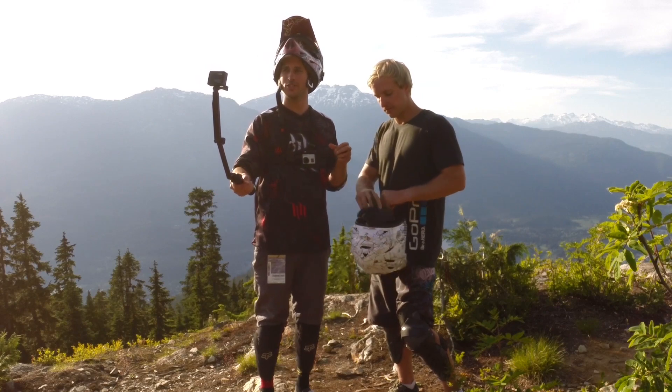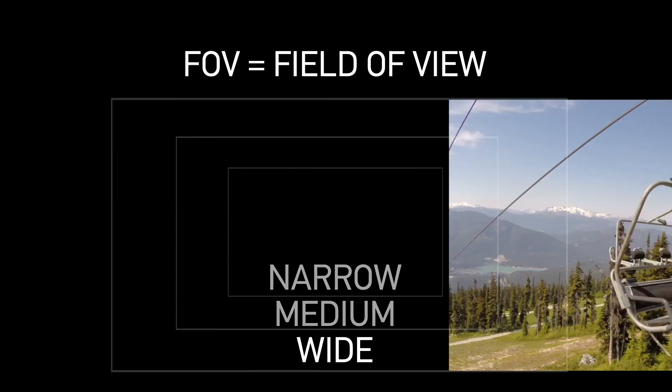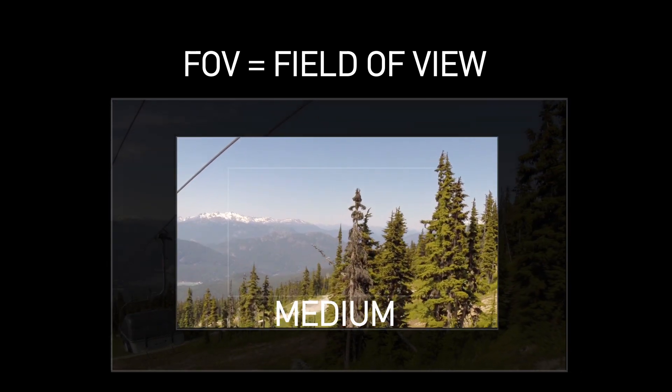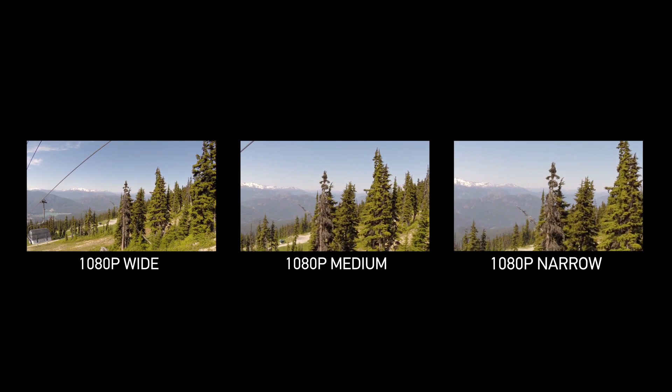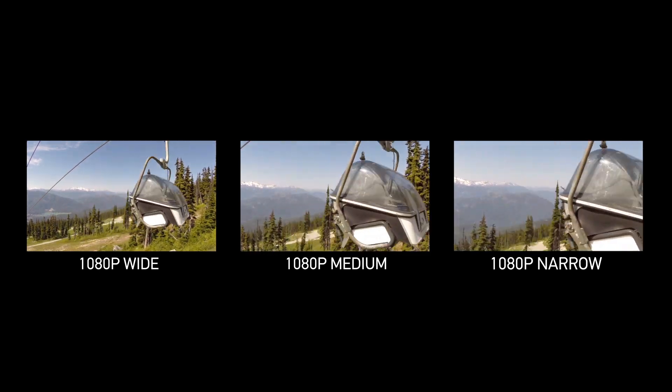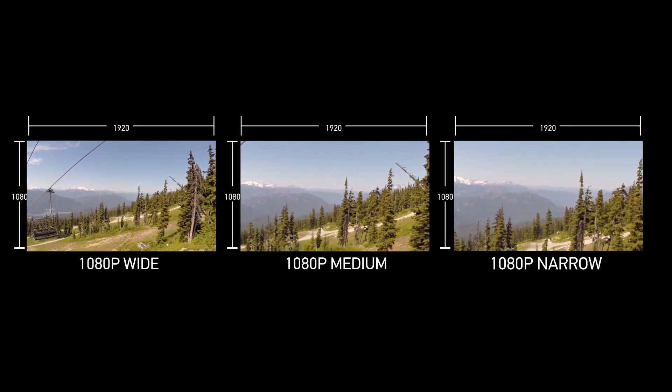Now that we've gone through all the resolutions and frame rates, the last thing to choose when selecting a video mode is the FOV — field of view. When you change the FOV from wide to medium to narrow, you're essentially zooming in on your video by cropping in on the sensor, which isn't the same as a digital zoom, so it still retains high quality video at the same resolution. At GoPro we use wide for pretty much anything where we need that immersive view. Try medium and narrow for smooth or static shots to see how it gives a totally different feel than you're used to with a GoPro.